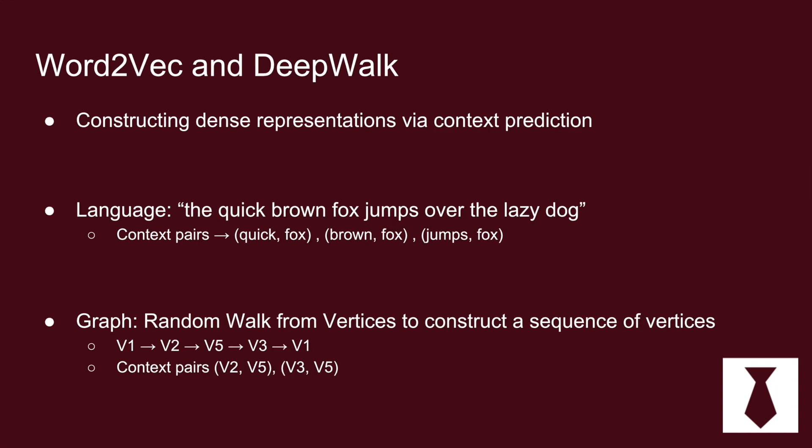So word2vec is this idea that you take these context windows of words such as in the sentence the quick brown fox jumps over the lazy dog. You have these context pairs like quick fox, brown fox, and jumps fox. And when you have enough data it'll become a semantic space because the context actually does give you a lot of information about the text.